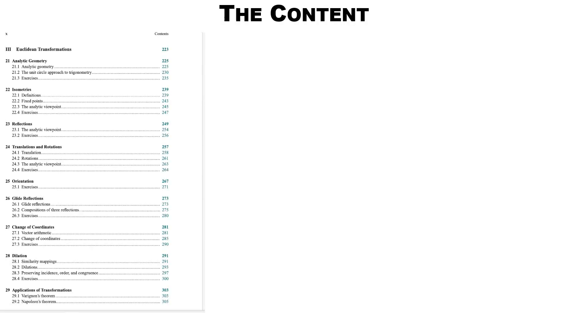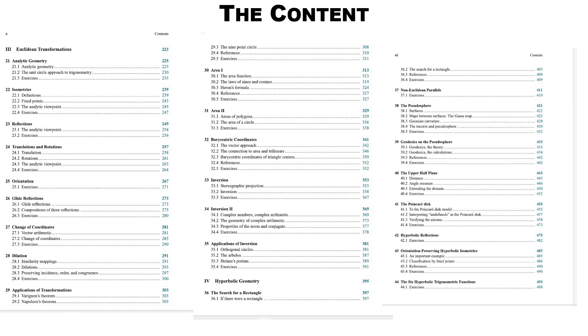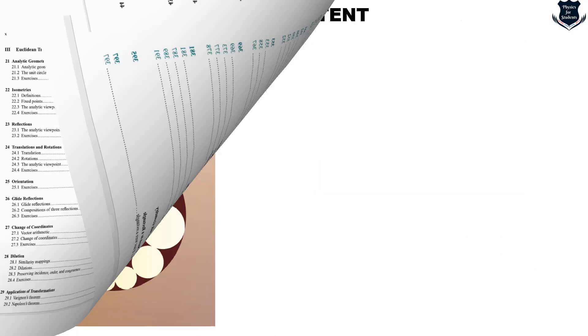Next page we find Euclidean transformations which are very central. It deals with analytic geometry, isometries, reflections, because otherwise without the transformation we won't be able to move to some other plane, dilation, etc. Then it moves to area and there are lot of exercises which you can do: areas of polygons, barycentric centers, inversion, inversion 2 and here from it is a little bit advanced. Applications of inversion, hyperbolic geometry, non-Euclidean parallels, pseudosphere, geodesics, upper half plane, Poincaré disk, hyperbolic reflection and all those things.